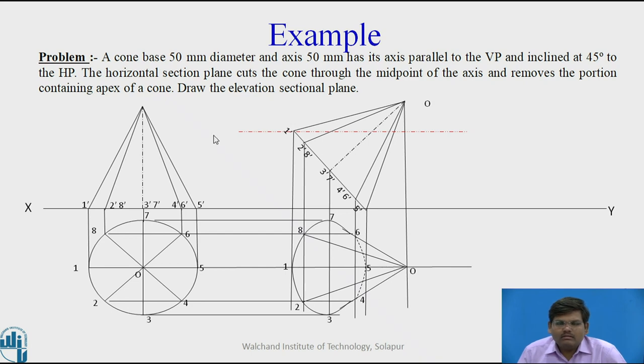Now the cutting plane wherever cuts the generators of the cone, let us consider those points. First point we obtain it as here. Second over here. Third at this point, O3-7. Fourth at O4-6. And fifth at O5. Let us name these points. So P1, P28, P37, P46 and P5.